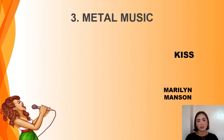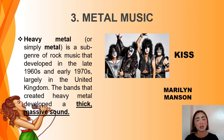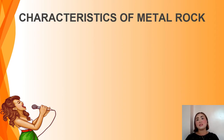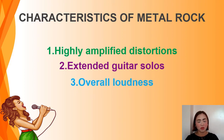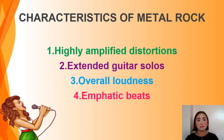The third genre of music is metal music. Heavy metal, or simply metal, is a subgenre of rock music that developed in the late 1960s and early 1970s, largely in the United Kingdom. The bands that created heavy metal developed a thick, massive sound. The characteristics of metal rock include: highly amplified distortions, extended guitar solos, overall loudness, and emphatic beats. When it comes to performance style, the genres, lyrics, and performance styles are sometimes associated with aggression and machismo.